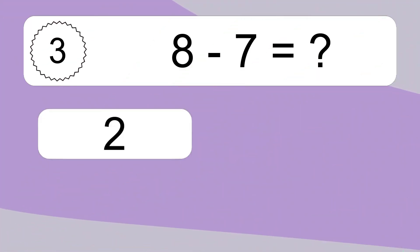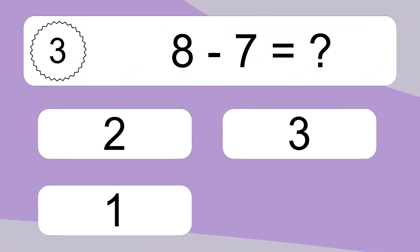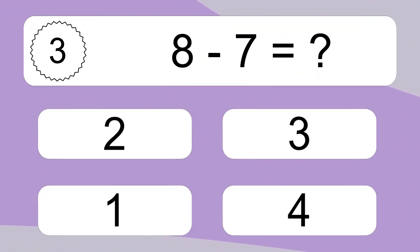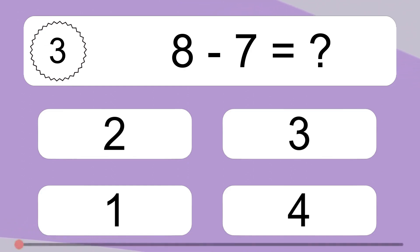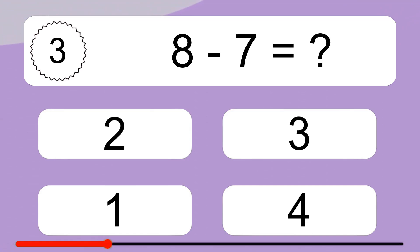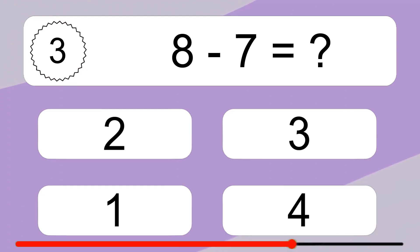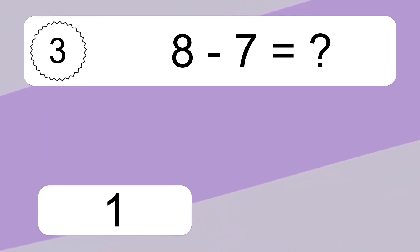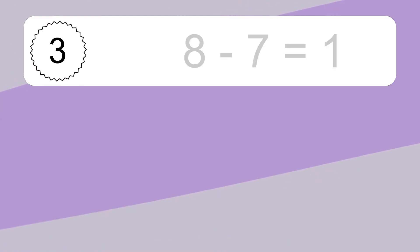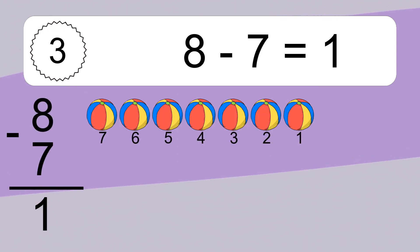8 minus 7 equals what? 8 minus 7 equals 1.